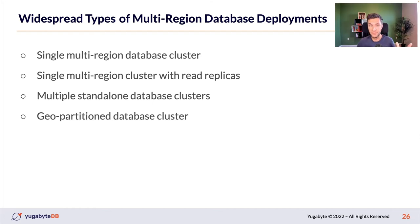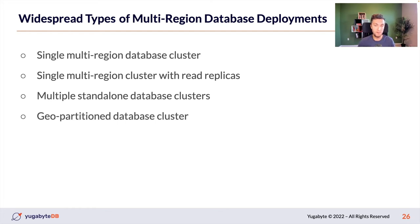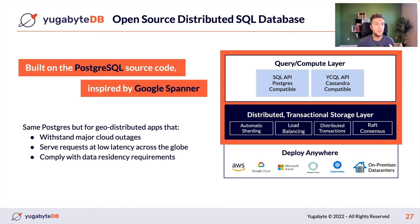I'll be using YugabyteDB as an example. YugabyteDB is an open-source distributed SQL database built on PostgreSQL source code and inspired by Google Spanner. It's distributed, scalable, comes with automatic sharding, supports Raft for consistency, runs distributed transactions, and is built on PostgreSQL. You can migrate existing PostgreSQL applications to YugabyteDB when you need to withstand cloud outages, scale by adding nodes, serve user requests with low latency across multiple regions, or comply with data residency requirements.